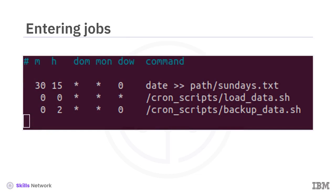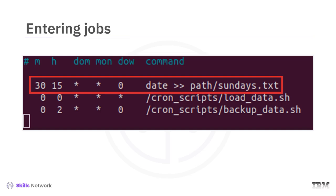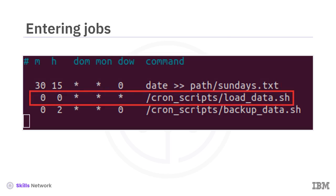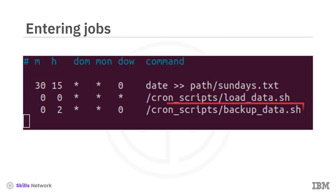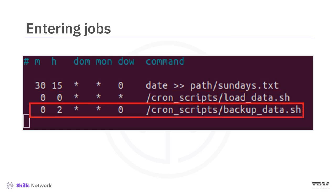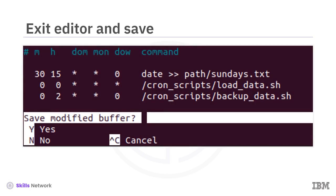Here, I have entered three example Cron jobs. Notice that extra spaces are ignored, so to improve readability you can align your entries as columns under the header. The first entry instructs Cron to append the current date to the file Sundays.txt at 15:30 every Sunday. The next line specifies a load data shell script to run at midnight every day, while the last line results in Cron running the backup data shell script at 2 a.m. on Sundays. To save the job, type Control+X to exit the editor, then enter Y to save your changes. The jobs are now in production.